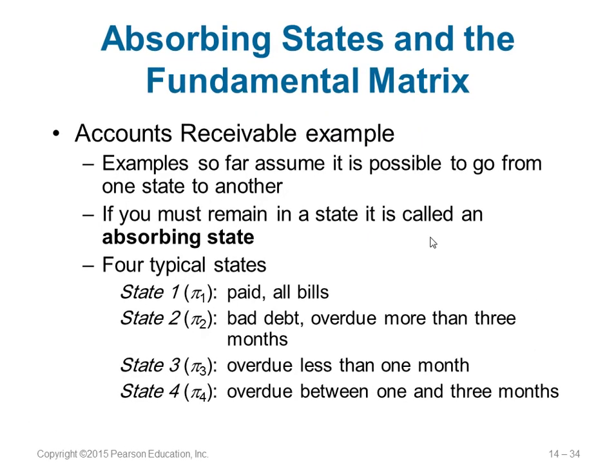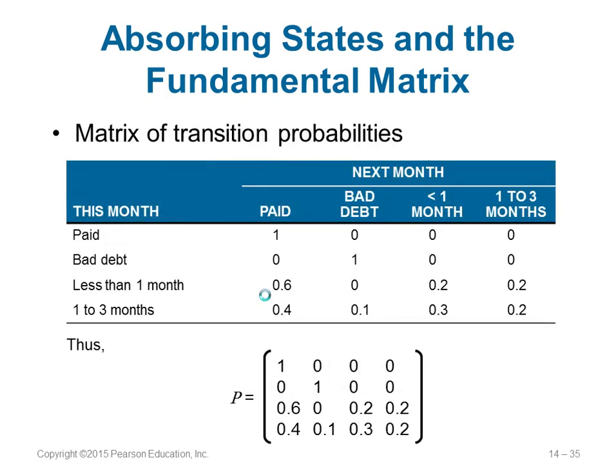That is what is called an absorbing state. An absorbing state is a state where once you end up there, you will not go anywhere — you stop there. For example, consider four states in an accounts receivable context: state 1 is paid (all bills paid), state 2 is bad debt (more than three months overdue), state 3 is overdue less than one month, and state 4 is overdue between one to three months.